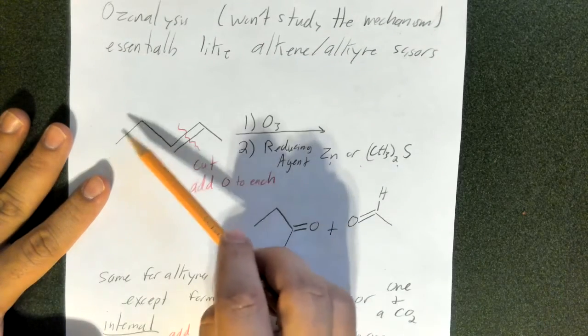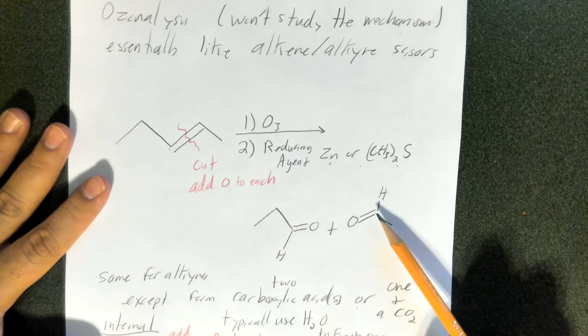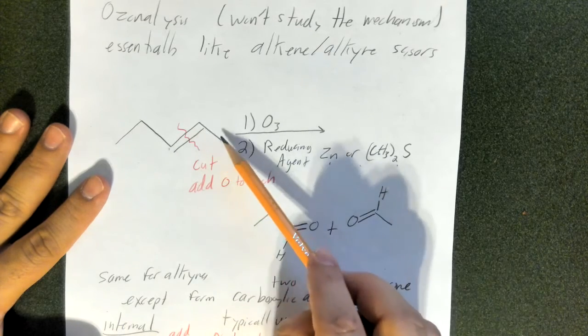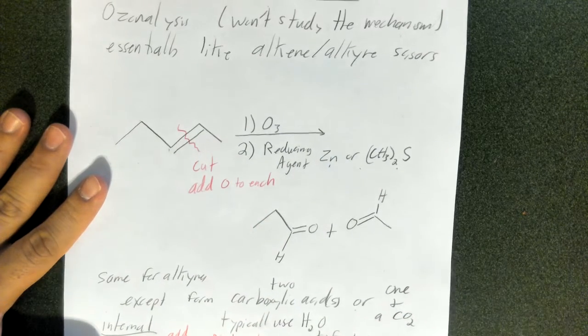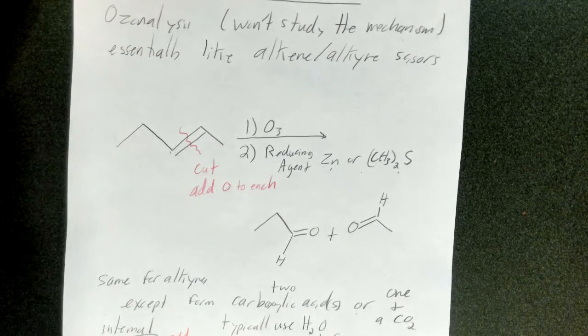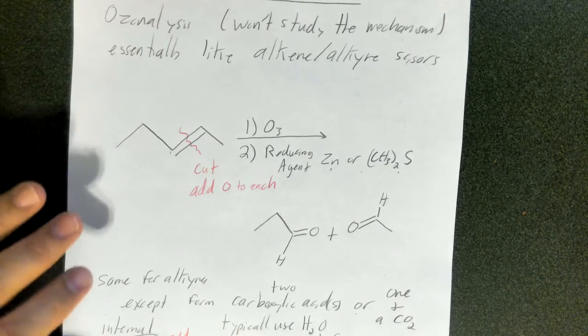One, two, three carbons on each side. One, two carbons on each side. And that's pretty much it for ozonolysis. That is what it does, and you need to be aware of it.